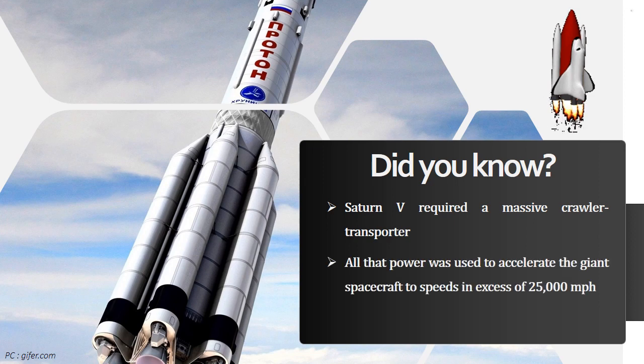All that power was used to accelerate the giant spacecraft to speeds in excess of 25,000 miles per hour. That's about 15 times faster than a rifle bullet. The Saturn V was launched 13 times, 12 for Apollo and once to place the Skylab space station in orbit. Not once were any crew or cargo lost during flight.